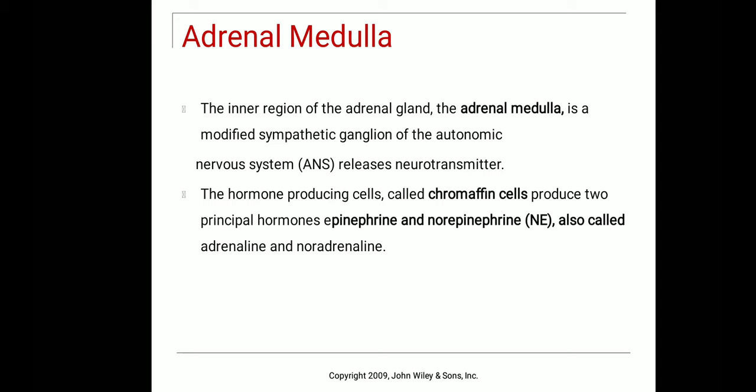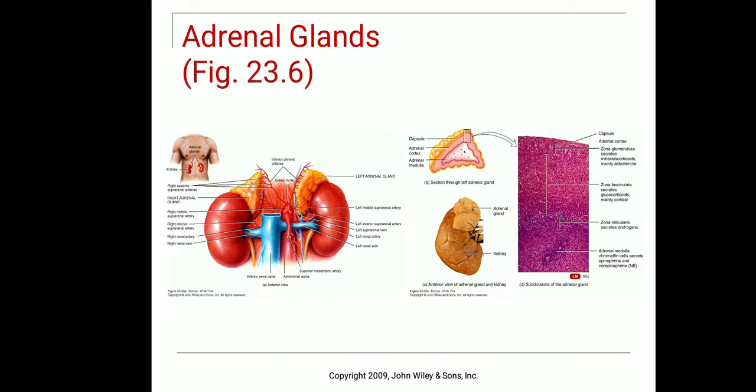The adrenal medulla has modified nervous cells. During the embryonic stage of development, a group of nervous cells migrates to form the adrenal medulla. The adrenal medulla has hormone-producing cells called chromaffin cells, which produce two types of amine hormones: epinephrine and norepinephrine, also called adrenaline and noradrenaline.